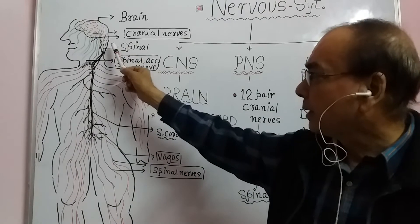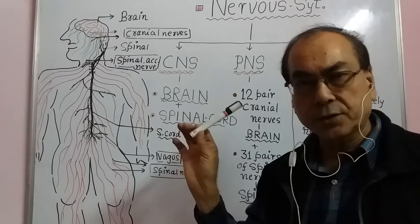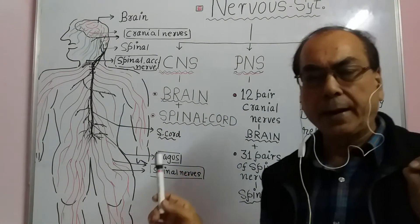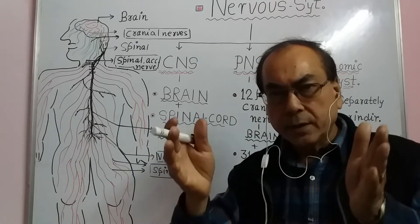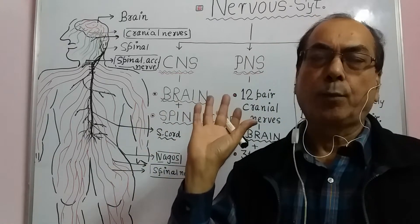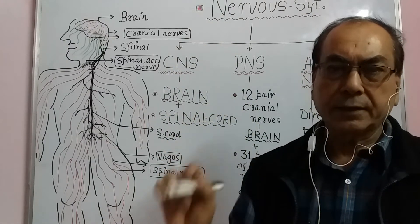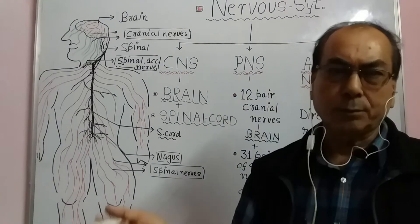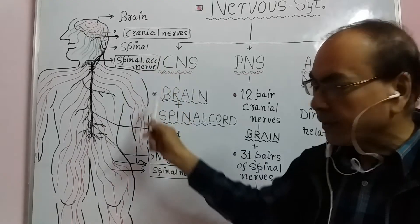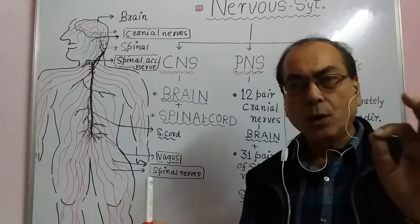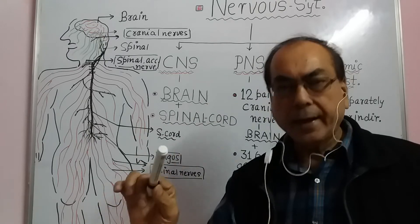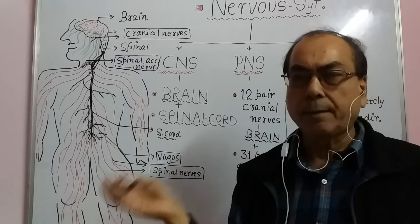From the brain arises a cord-like structure, which is called the spinal cord. The spinal cord is present inside the vertebral column and backbone. It starts from the lower part of the brain — the medulla oblongata — and ends at the L1 vertebra, that is the first lumbar vertebra.